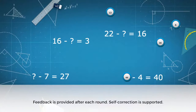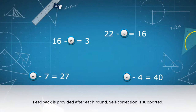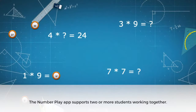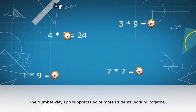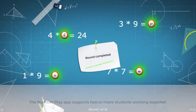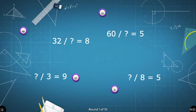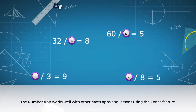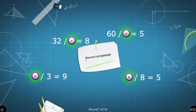Correct items will give off a green glow and incorrect items will glow red. The students have the opportunity to self-correct. As with other apps in Snowflake MultiTeach, these apps support two or more students working together. They work well when presented in zones with related math apps or teacher-made math lessons.